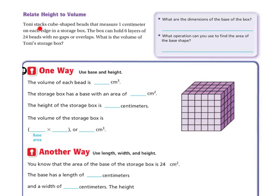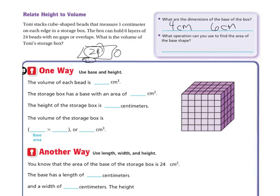Let's relate height to volume. Tony stacks cube-shaped beads that measure 1 centimeter on each edge in a storage box. The box can hold 6 layers of 24 beads with no gaps or overlaps. What is the volume of Tony's storage box? First, what are the dimensions of the base of the box? The box can hold 6 layers of 24 beads, so the bottom layer is 24. Two numbers that work are 4 and 6: 4 times 6 is 24, that's the base area.